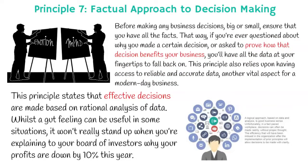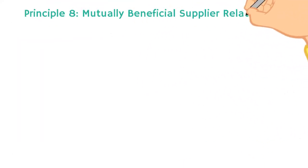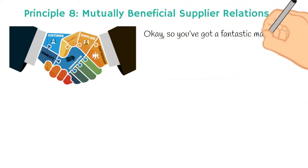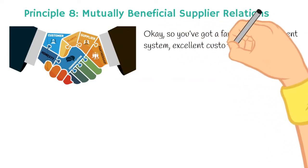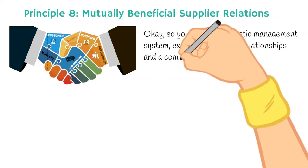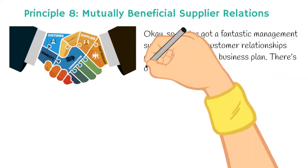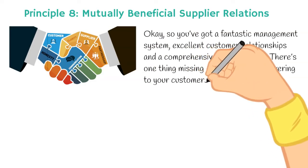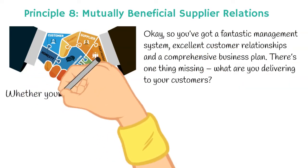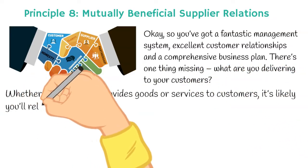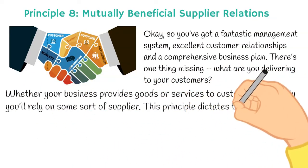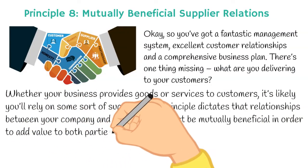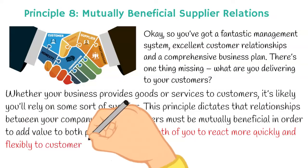Principle eight: mutually beneficial supplier relations. So you have a fantastic management system, excellent customer relationships, and a comprehensive business plan — but there's one thing missing. What are you delivering to your customers? Whether your business provides goods or services to customers, it's likely you rely on some sort of supplier. This principle dictates that the relationship between your company and any supplier must be mutually beneficial in order to add value to both parties. It allows both of you to react more quickly and flexibly to customer demand when things are smooth and harmonious between you, as well as making it easier to negotiate on costs.